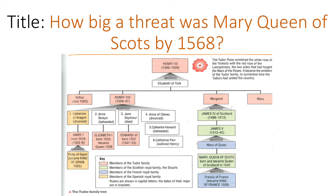Hello again. Today we're going to look at several key people and events which links back to the Catholic threats we were looking at last time. First we'll look at Mary Queen of Scots - who she was, why she posed such a threat, and why she had a legitimate claim to the throne. We'll then look at plots involving her and attempts to overthrow Elizabeth, and finally we'll look at Francis Walsingham, Elizabeth's spymaster, and how he was able to intercept these threats and expose the plots.